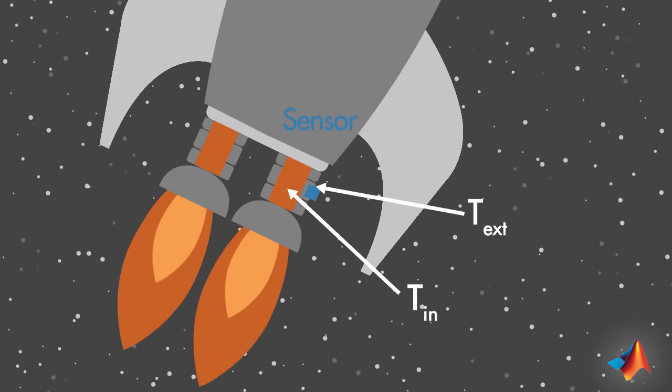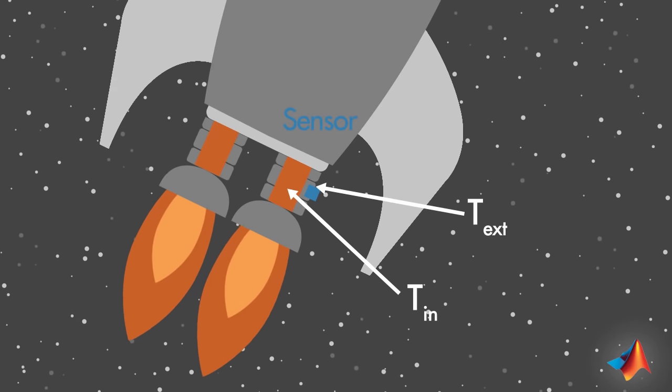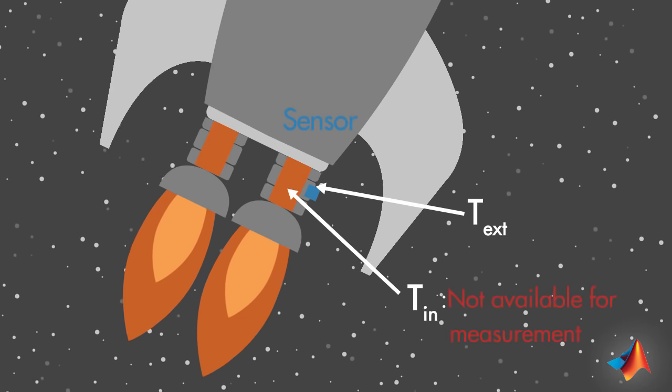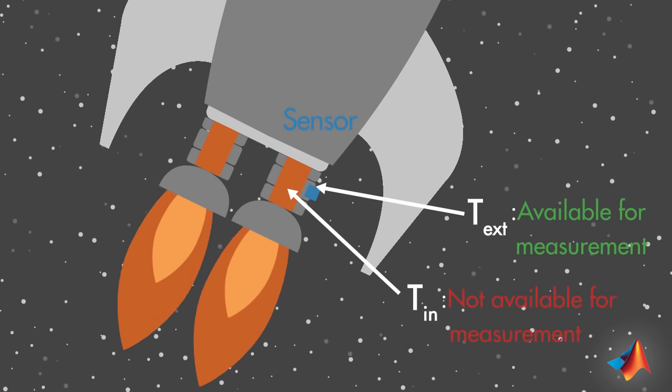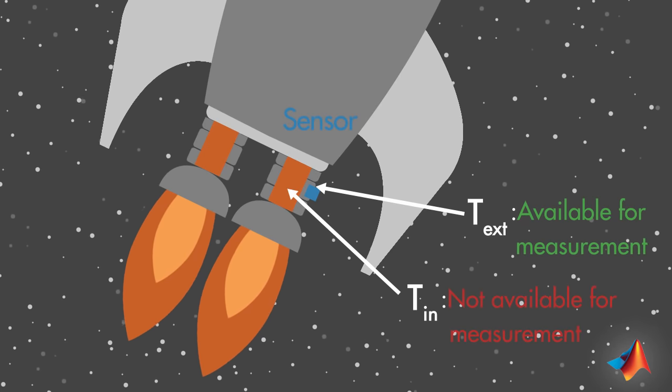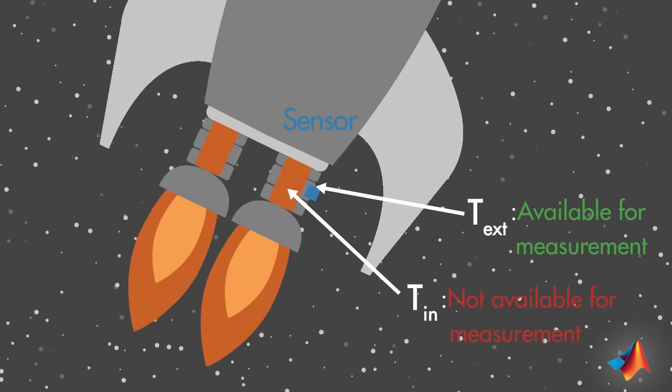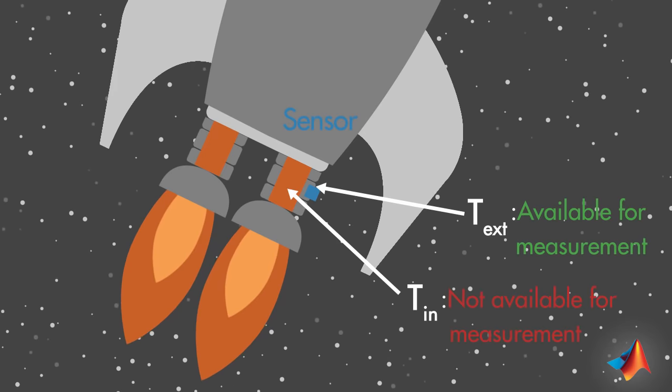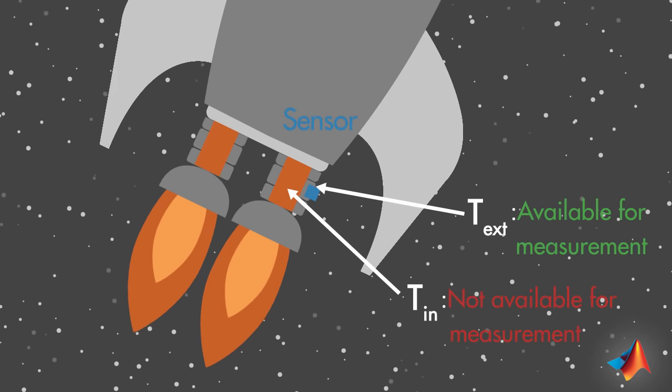The problem you're facing here is that you want to measure internal temperature of the chamber, but you can't. Instead, you have to measure external temperature. In this situation, you can use a Kalman filter to find the best estimate of the internal temperature from an indirect measurement.